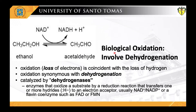Most of the time, oxidation — the loss of electrons — is coincident with the loss of hydrogen. In biological systems, oxidation is often synonymous with dehydrogenation, and many enzymes that catalyze oxidation reactions are termed dehydrogenases. Notice that the more reduced compounds are richer in hydrogen — for example, alcohol — whereas the more oxidized compounds, such as acetaldehyde, have less hydrogen.